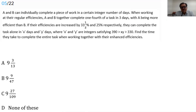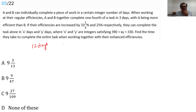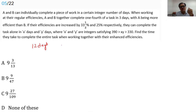A and B together can complete one-fourth of the task in three days, which means they can complete the full task in 12 days. Now, A is faster than B. If they were equally efficient, they would both take 24 days individually. Because A is more efficient, A will take less than 24 days and B more than 24.